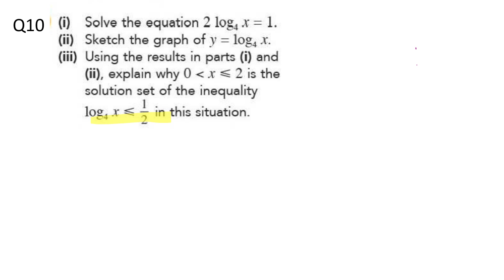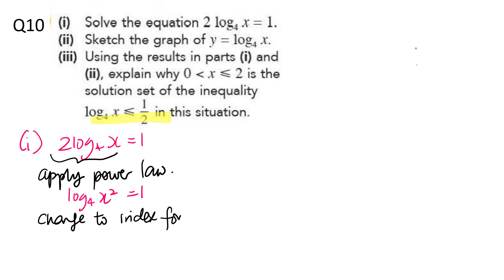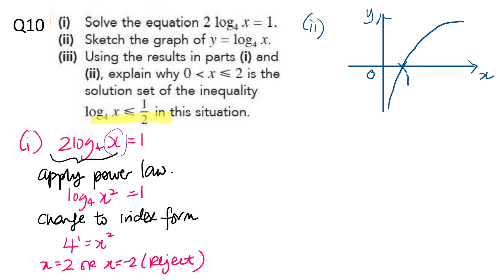Let's do some other questions. Part one: solve the equation. Apply the power law and bring the 2 up so that log base 4 of x squared equals 1. Convert to index form to get x squared equals 4. So x equals 2 or x equals negative 2. But x equals negative 2 is rejected because for the log to be defined, the argument must be more than 0. For part two, sketch the graph — it is an increasing curve because the base is 4, which is more than 1, and the x-intercept is 1.